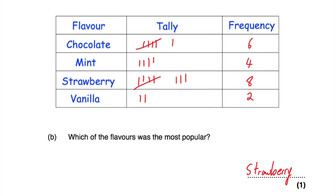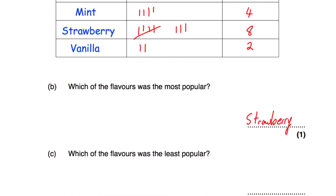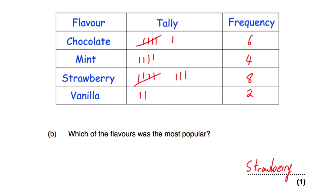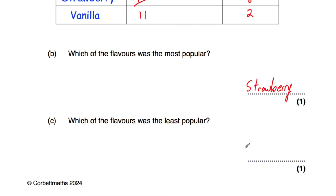Part C says which of the flavours was the least popular. That's going to be the one with the lowest frequency. Only two people bought vanilla ice cream, so vanilla is the least popular flavour.